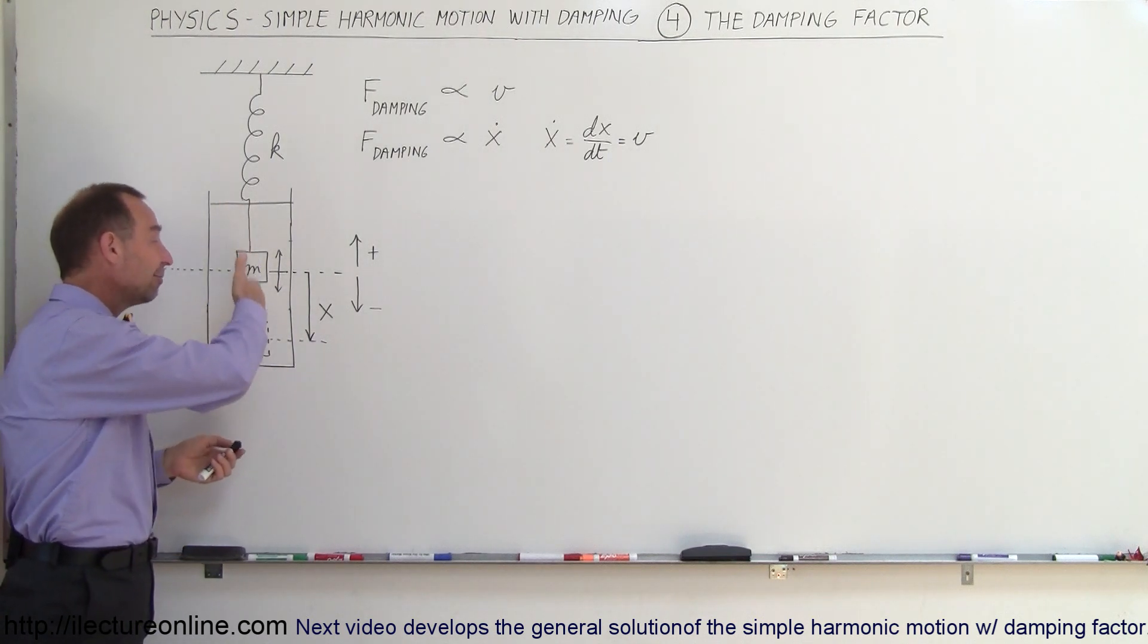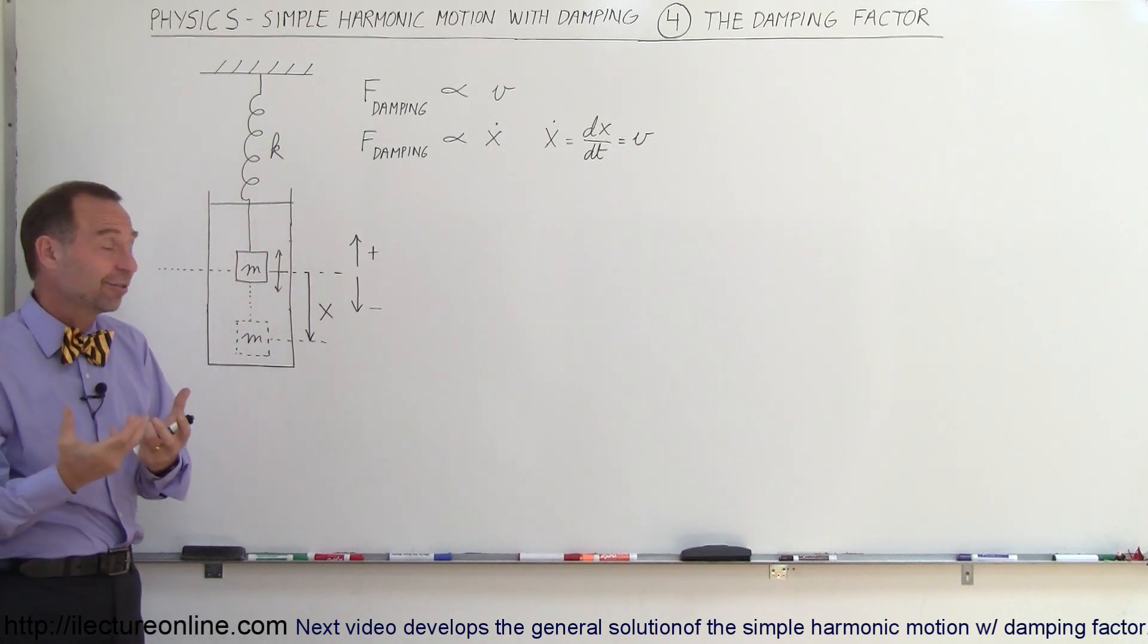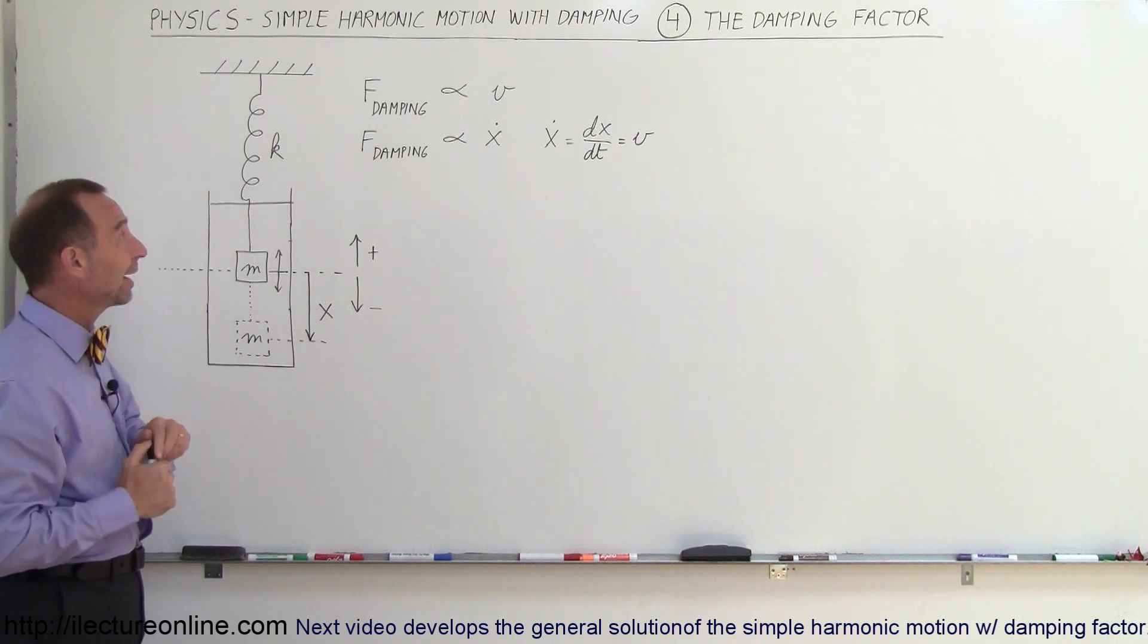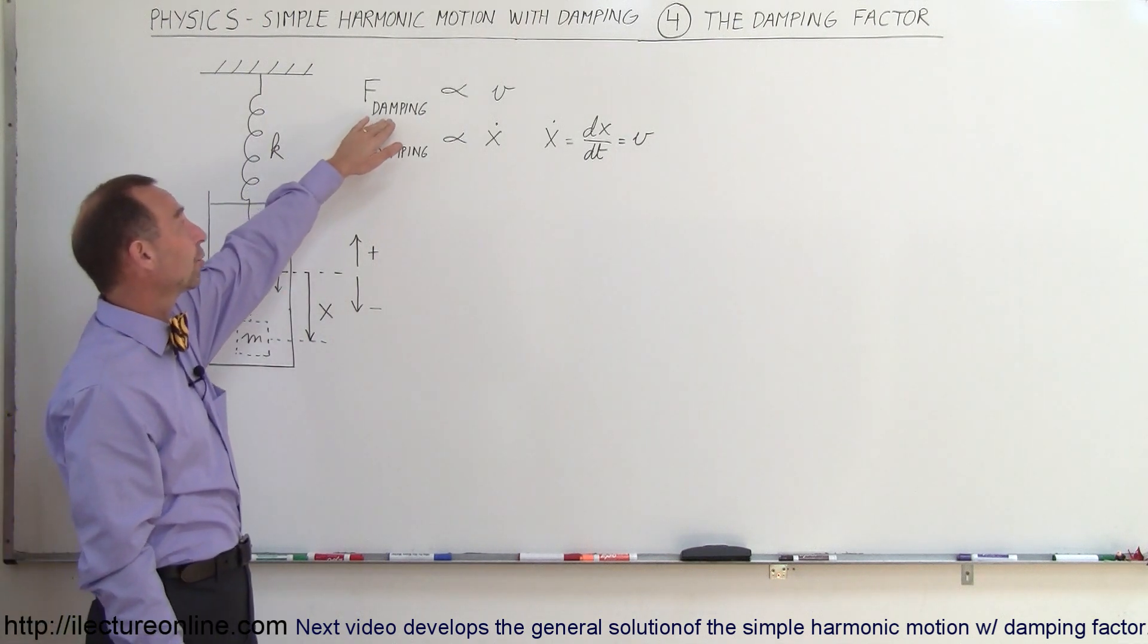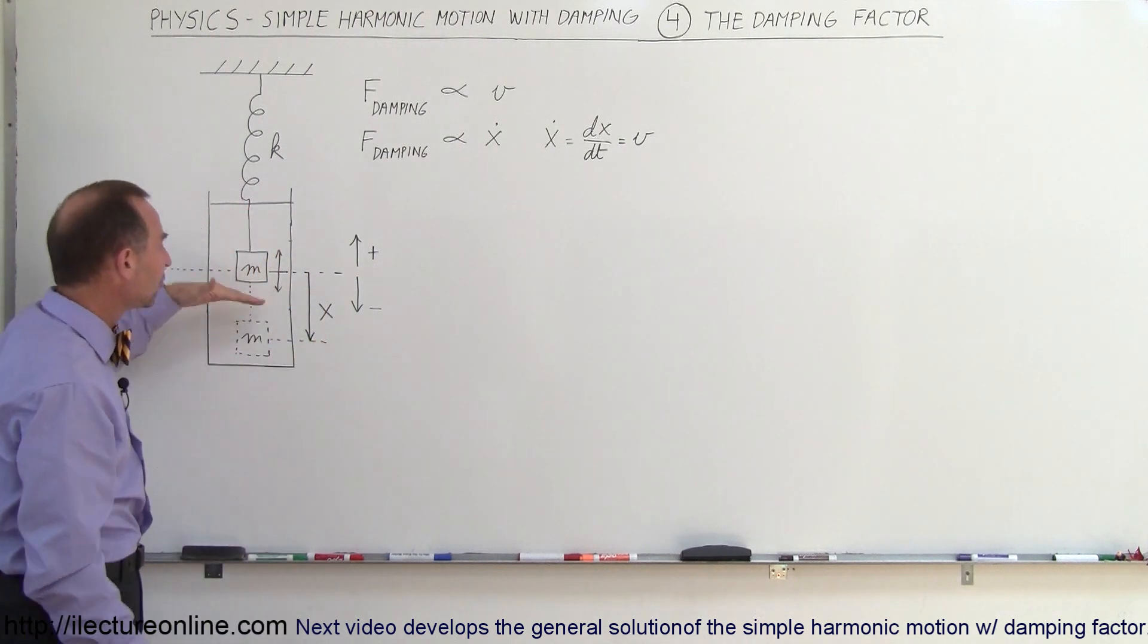As it's moving back and forward, it's going to feel the resistance of that fluid. The greater the viscosity of the fluid, the greater the damping. So the damping force is going to be somehow proportional to the velocity of the motion of this object.